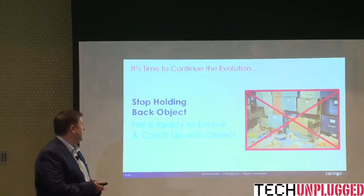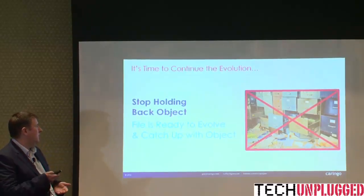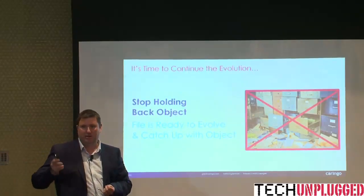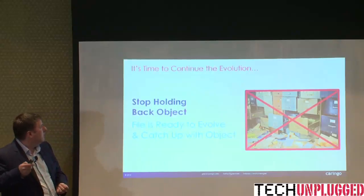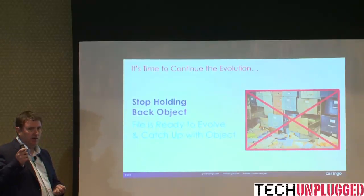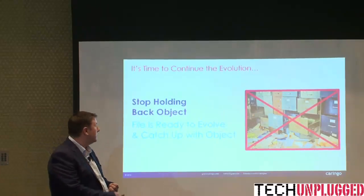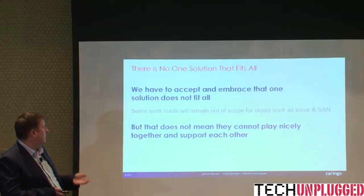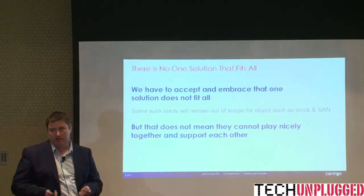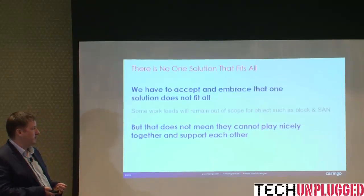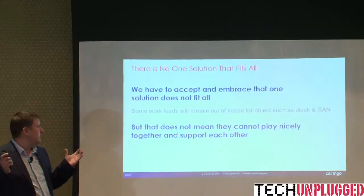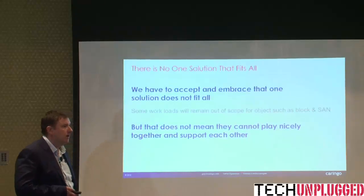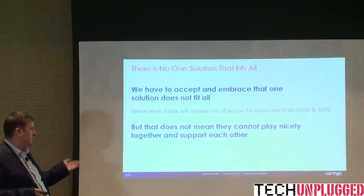We looked at this and said, what we're doing by trying to create these gateways is holding back object. It's time for file to evolve and catch up with object — to stop making object try to go back and work like file. It's time for file to become object. And to do this, we have to accept that there is not one solution that fits all use cases. Some workloads will remain out of scope for object, such as things that need block storage and SAN, but that doesn't mean they cannot play nicely together and support each other.